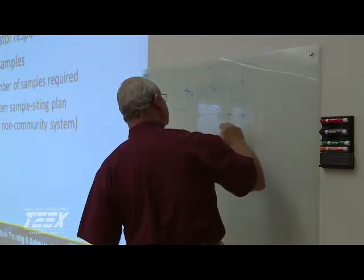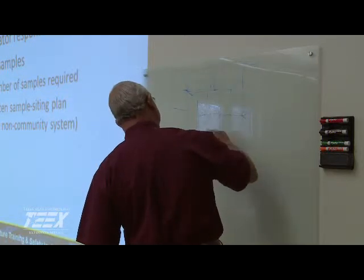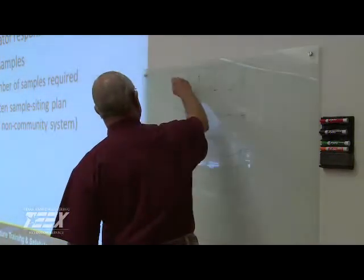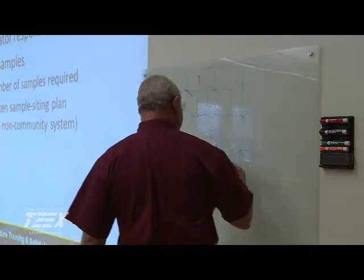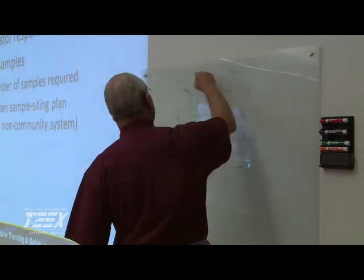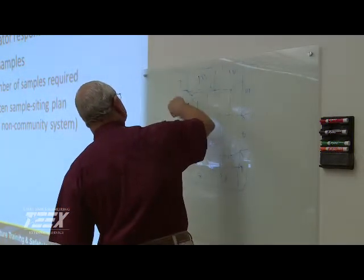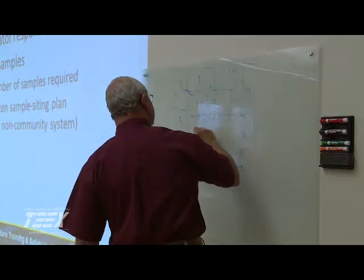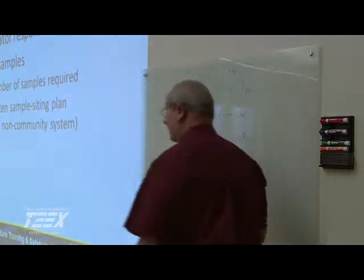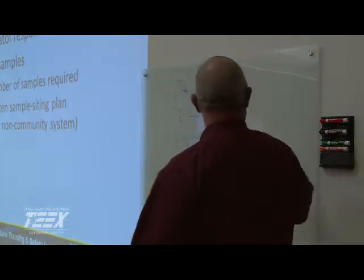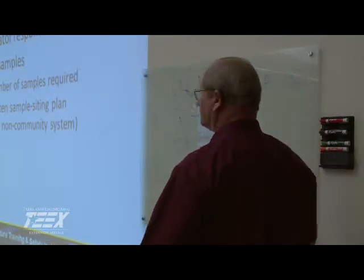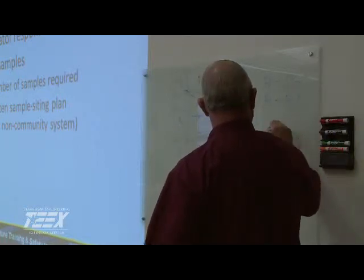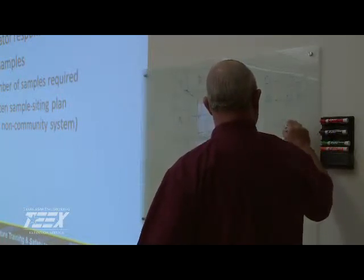Now in the distribution system — let's say I have a small loop, maybe a mobile home park with houses on the inside and outside. Let's say we have 16 connections total. A represents a chlorine sample, B represents a bacteriological sample, and C represents disinfection byproducts.